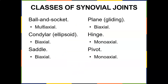Classes of synovial joints: you have a ball-and-socket, which is multiaxial; a condylor joint, which is biaxial; a saddle joint, also biaxial; a plane joint, which is gliding; a hinge joint, which is monoaxial; and a pivot, also monoaxial. Multi means multiple axes — your shoulder and hip can move in multiple directions. A condylor or saddle joint can go in two directions, while a hinge or pivot can only go in one.